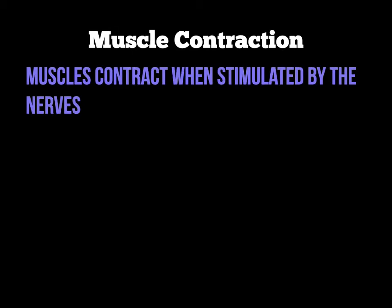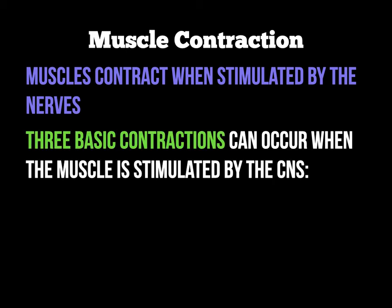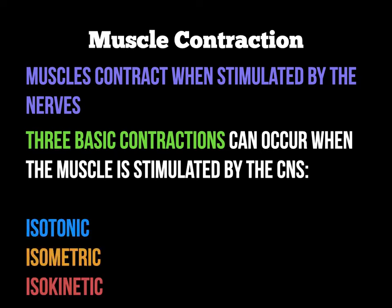Muscles can only contract when stimulated by the nervous system. We're looking at three basic contractions that the muscle can perform once stimulated — these you will have covered in the muscle fibre work earlier in the ASPE syllabus. These are isotonic contractions, isometric contractions, and isokinetic contractions.